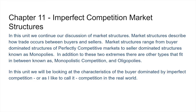This unit continues our discussion of market structures and describes how trade occurs between buyers and sellers. We've talked about the buyer-dominated market — perfect competition — and the seller-dominated market — the monopoly. Now we've got these in-between ones.